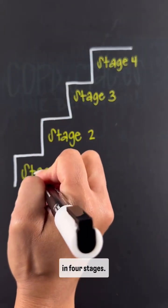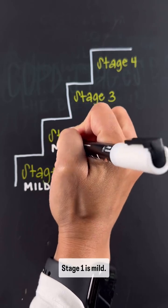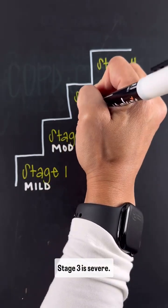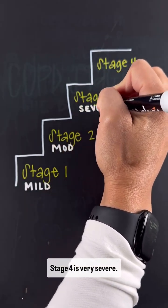COPD is in four stages. Stage one is mild, stage two is moderate, stage three is severe, stage four is very severe.